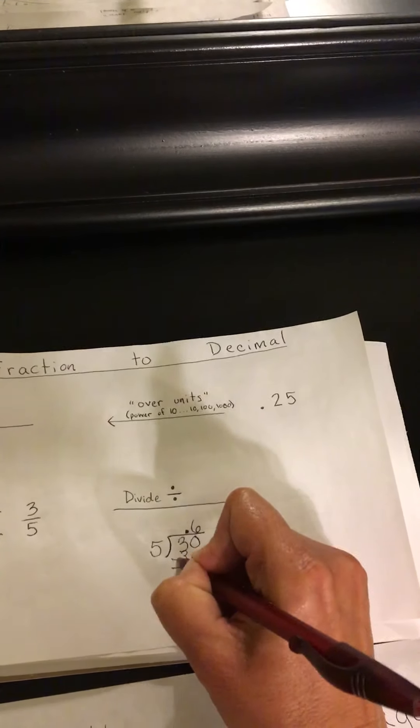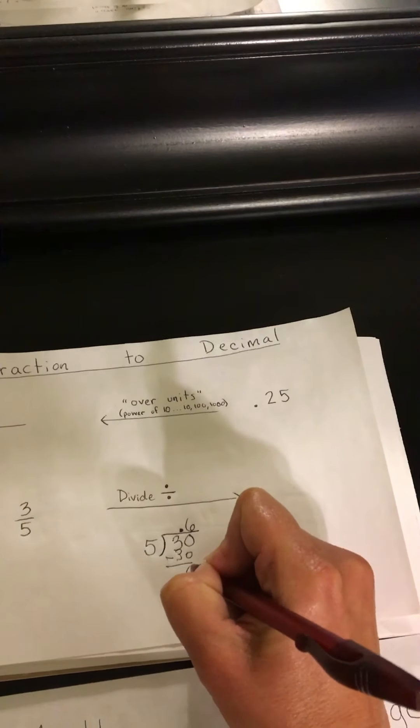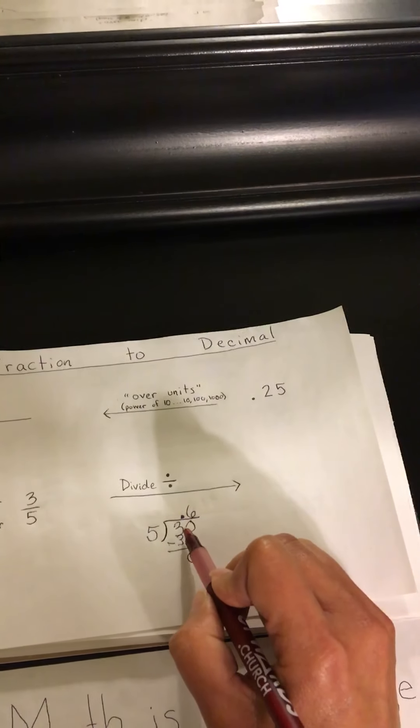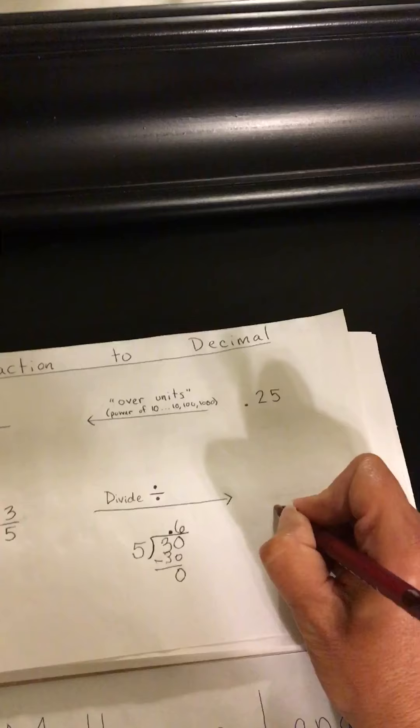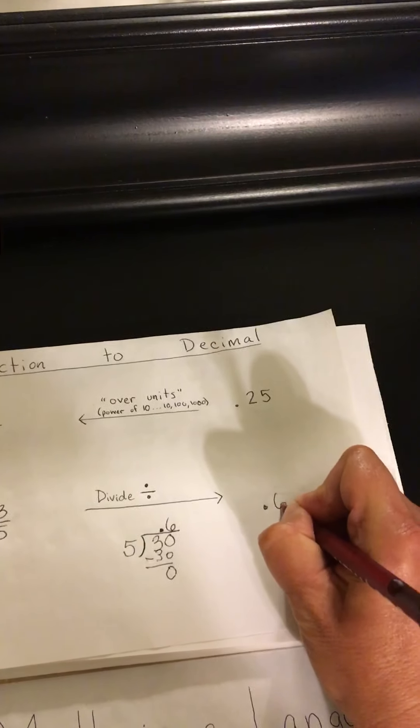And if I subtract those two, then I find out that 5 has gone into 30 perfectly 6 times. So now I have my decimal, 0.6.